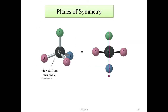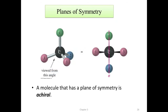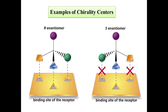What is a plane of symmetry? If a molecule viewed from one chiral center can be divided by an internal plane that makes both halves mirror images of each other, it is said to have a plane of symmetry. A molecule that has a plane of symmetry is achiral. A molecule without a plane of symmetry is chiral. For example, the R-enantiomer binds to a receptor site, while the S-enantiomer does not.